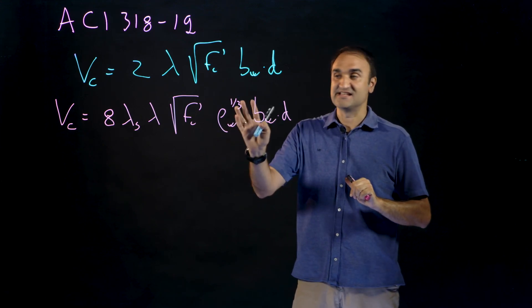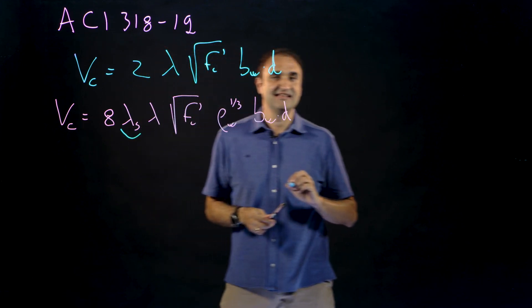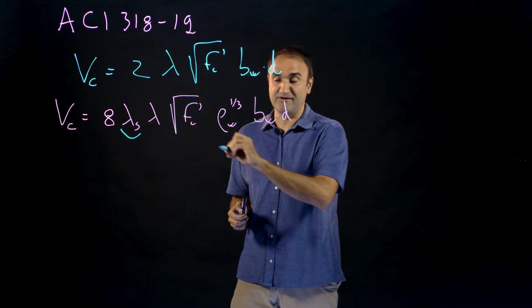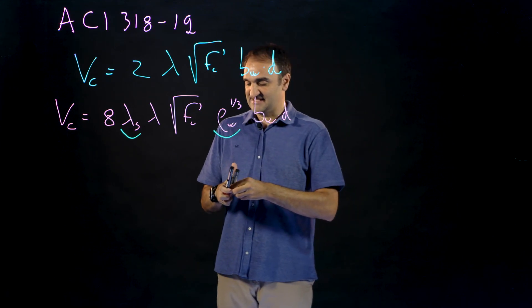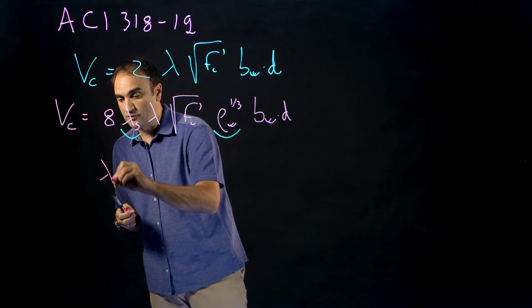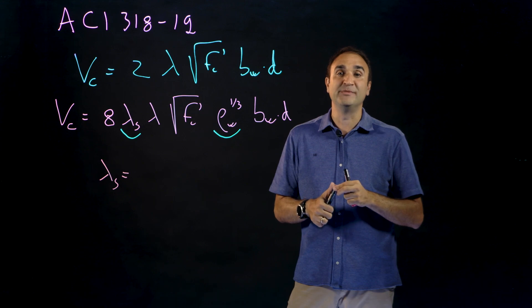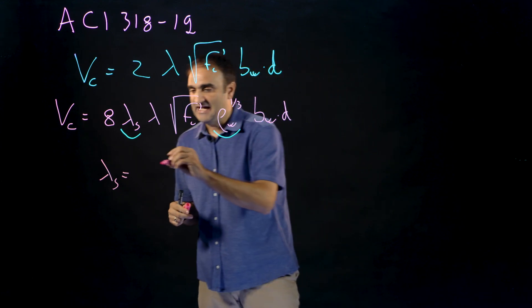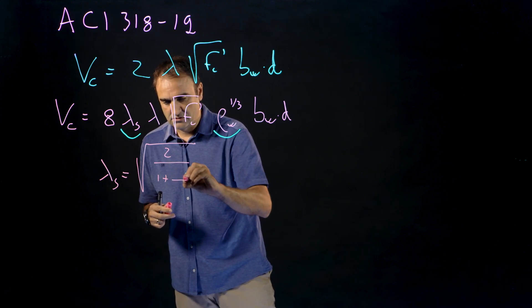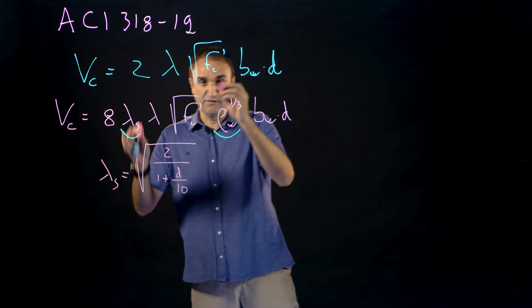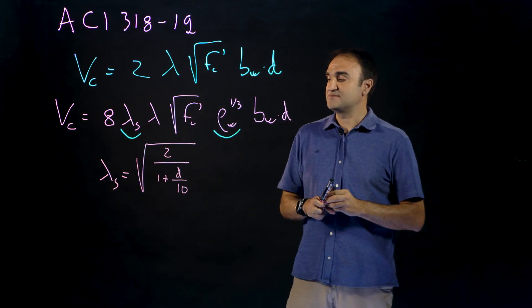So the main change is this size effect factor, this is very important, and the influence of the longitudinal reinforcement. The size effect factor comes from the work carried out by professor Bazant and the committee ACI 446 and you can write it as something like this, all of this of course with US customary units.